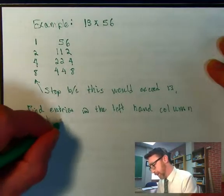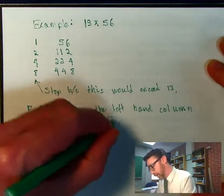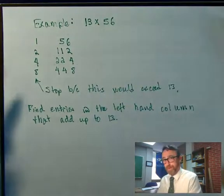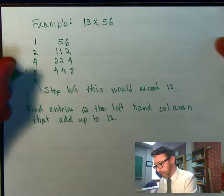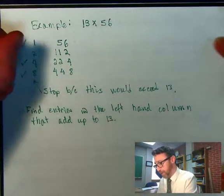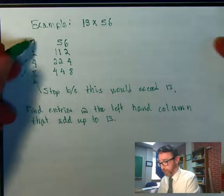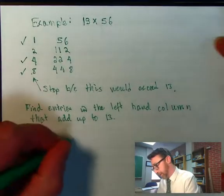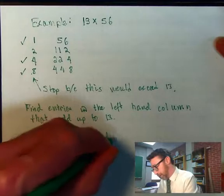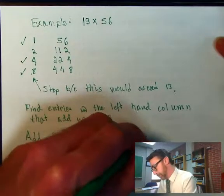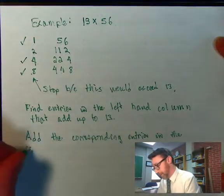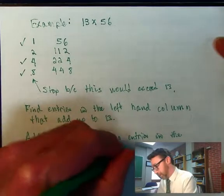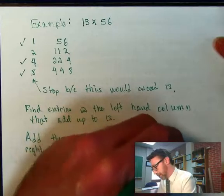Now what we need to do is we need to find entries in the left-hand column that add up to 13. So no matter what this factor is, we'll always be able to find entries in this column that add up to our factor. Not too difficult here. We do 8 plus 4, that gets 12, and then we need 1 to get 13. So 8 plus 4 plus 1 gives us 13.